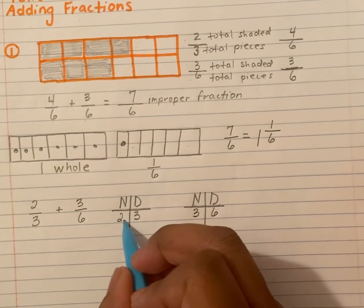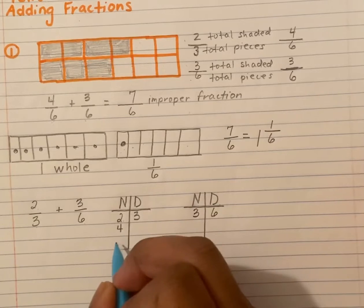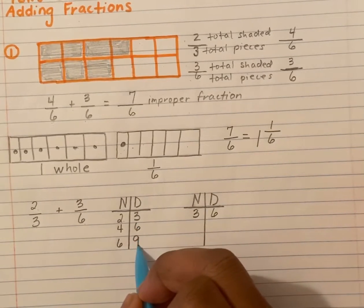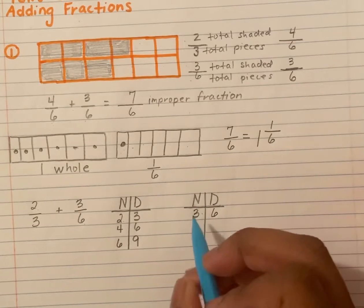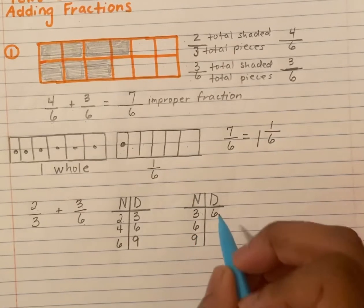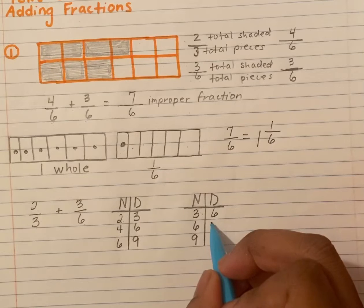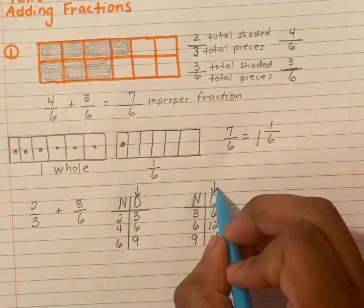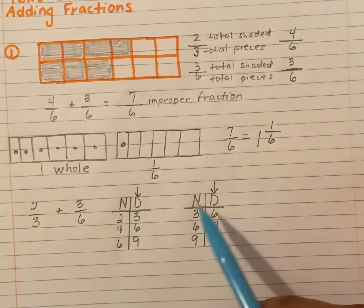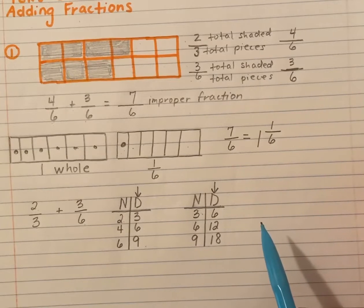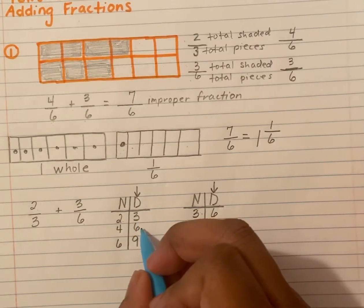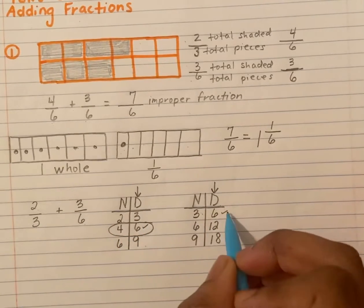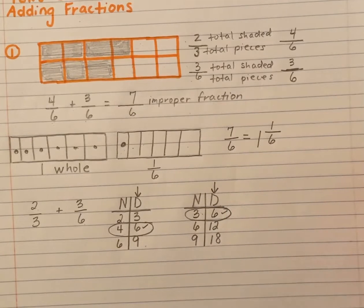Now we're going to skip count by the original numbers. Skip count by twos: two, four, six. Skip count by threes: three, six, nine. Skip count by threes again: three, six, nine. Skip count by sixes: six, twelve, eighteen. Now I'm going to focus on the denominators — can I find the same number on each side? I do — I have six and six. I'm going to circle three-six and three-six, so four-six and three-six.